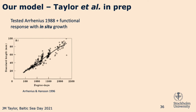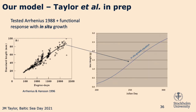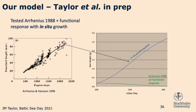Instead of modeling consumption, we used observed consumption. We took field data of herring growth with a pretty large sample size, took a line of best fit, converted it to wet weight, and then compared the old Arrhenius model combined with the functional response to how well it represents this in situ growth we observed. Not great — there were some discrepancies between the models; it wasn't really predicting our observed data that well, so we needed to update it.